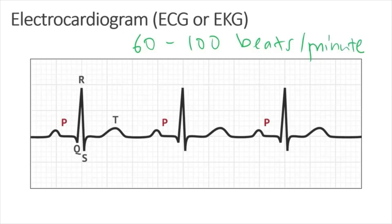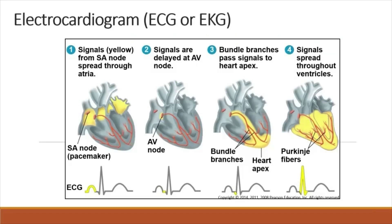From the ECG, the heart rate can be determined by examining the distance between the R-R interval. This normal ECG shows regular cardiac rhythm. When the SA node initiates an electrical impulse, the impulse spreads to the wall of the atria, and that is represented by the P wave.